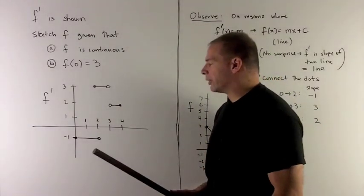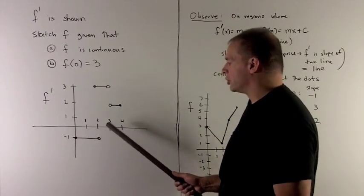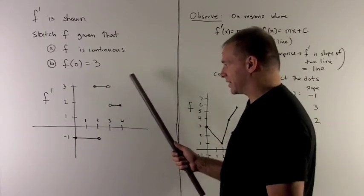The first thing to note about the graph of f prime here is that it's pretty much composed of just horizontal line segments.